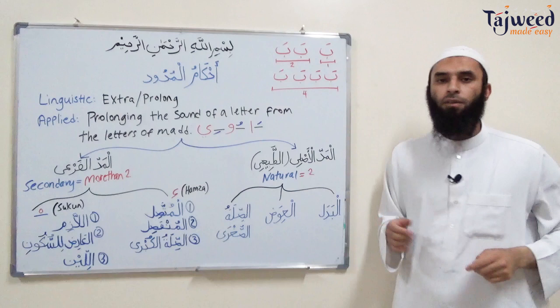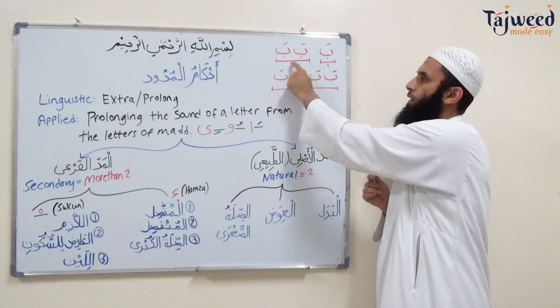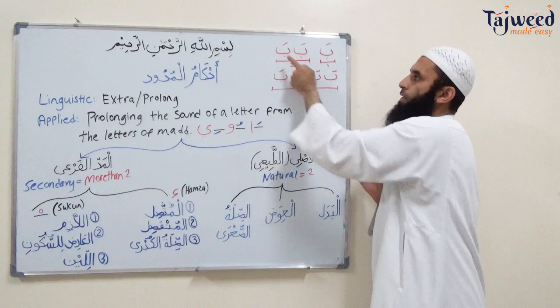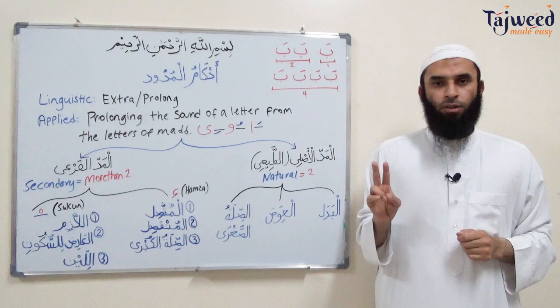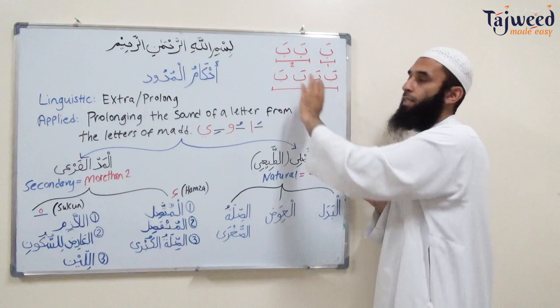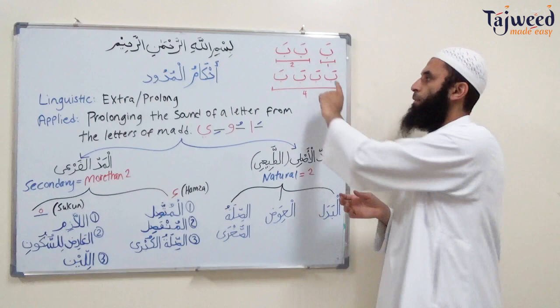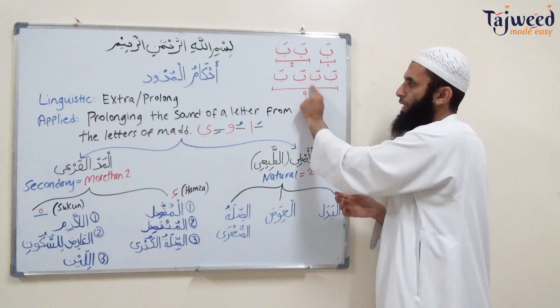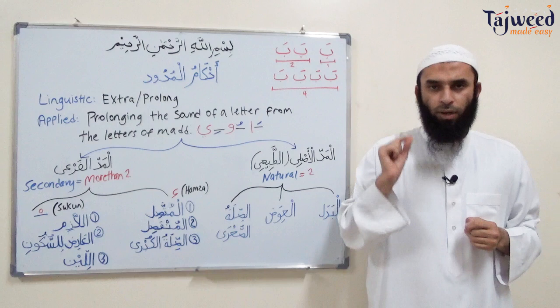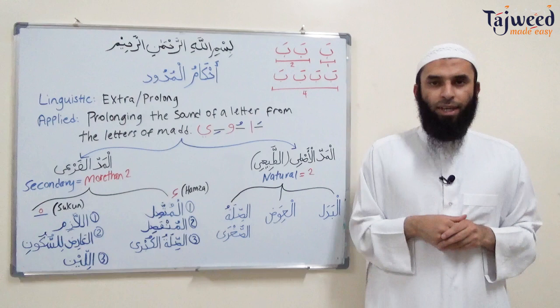If I say this mad is two haraka, it means the time it takes us to say two letters consecutively — ba, ba is two counts. So if I say this mad is four counts, ba ba ba ba — the time it takes us to say ba four times — that's four counts. This is how we measure counts: by the time it takes us to say one letter with a fatha, kasra, or dhamma, multiplied by the number of counts.